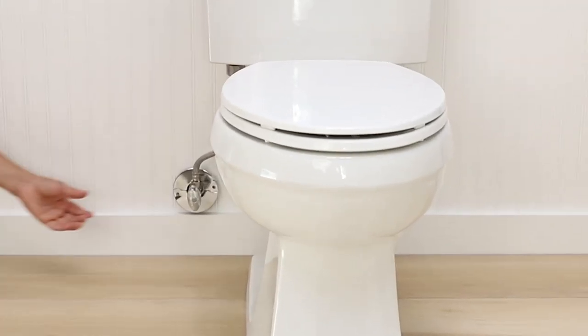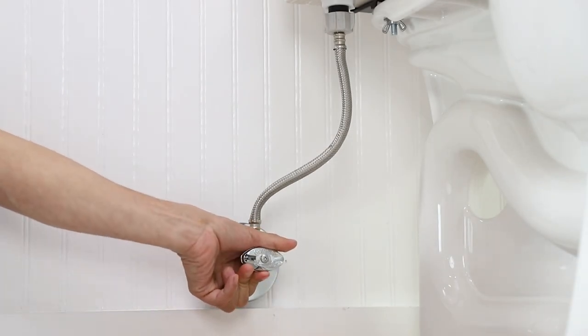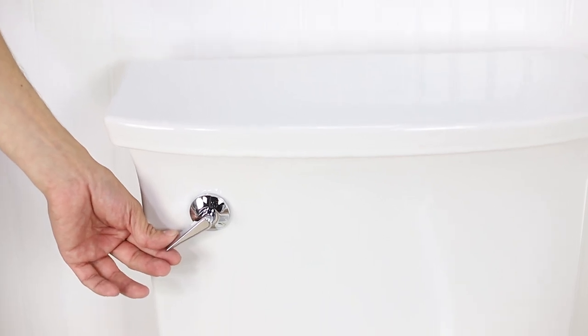Turn off the toilet water supply at the shutoff valve at the wall. Flush your toilet and hold down the flush handle until the water is fully drained out of the tank.